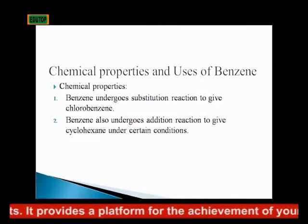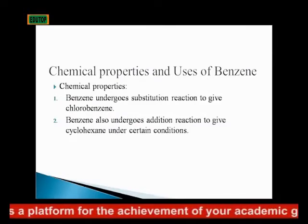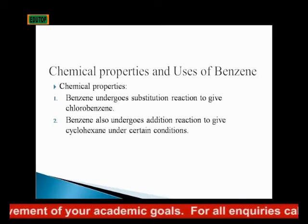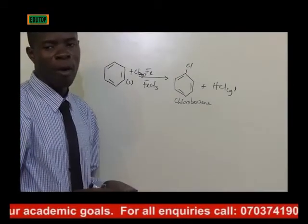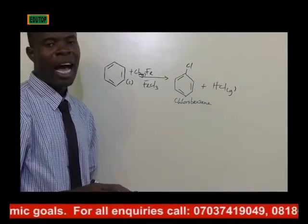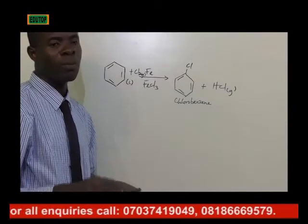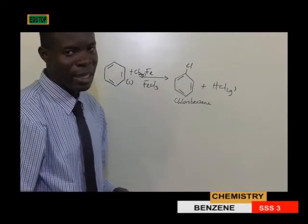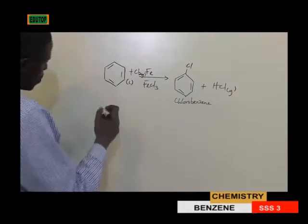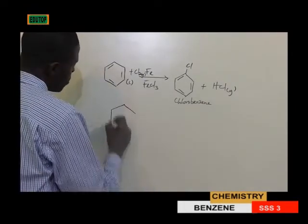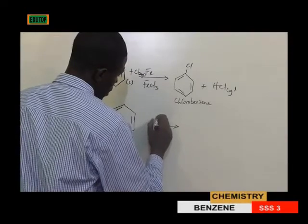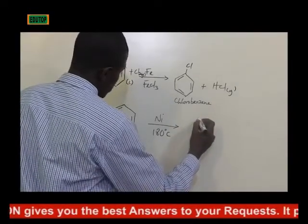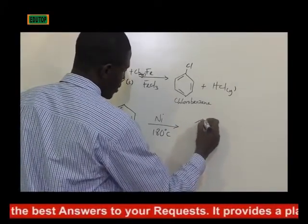Number 2: benzene undergoes an addition reaction to form cyclohexane under certain conditions. The catalyst involved is nickel, and the process is carried out at a temperature of 180 degrees centigrade. So when you have your benzene ring under a nickel catalyst at 180 degrees centigrade, you have the production of cyclohexane.